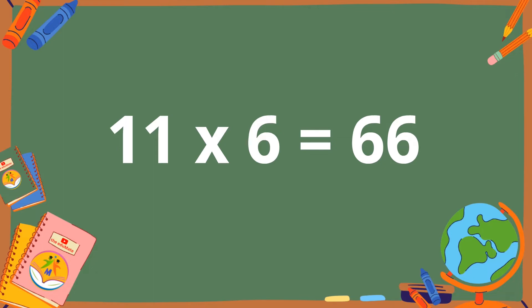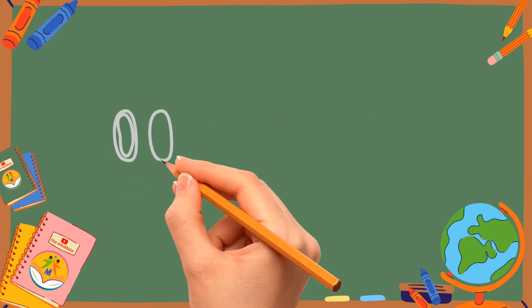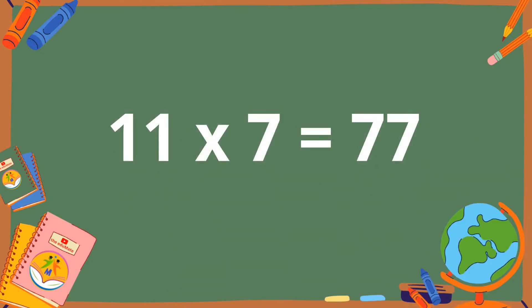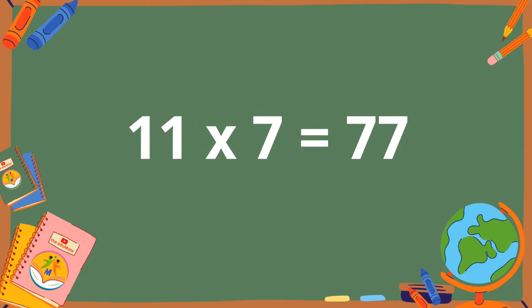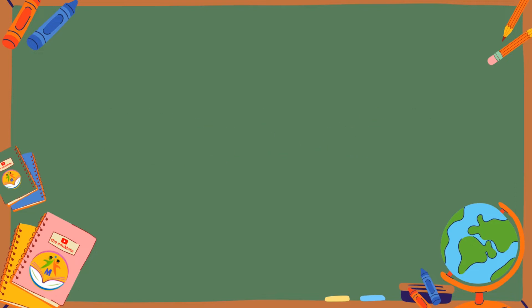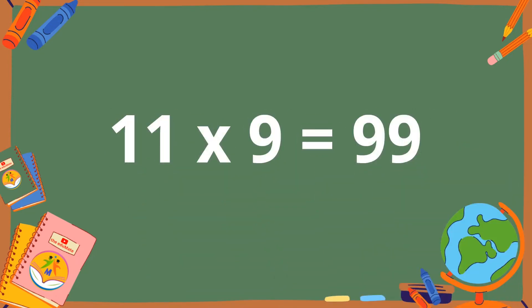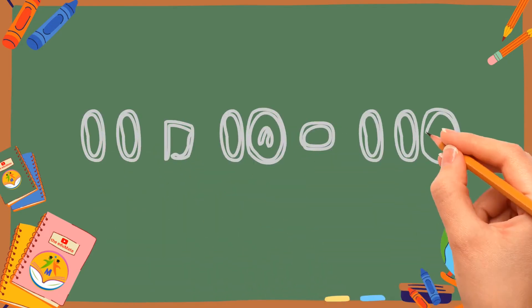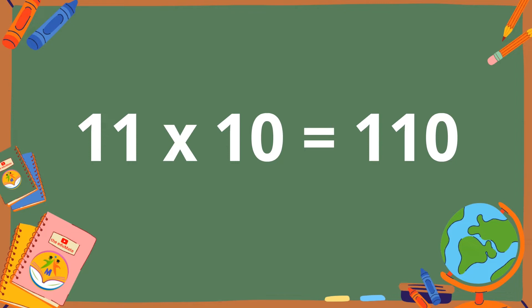11 sixes are 66. 11 sevens are 77. 11 eights are 88. 11 nines are 99. 11 tens are 110.